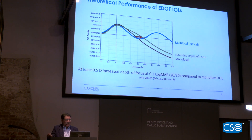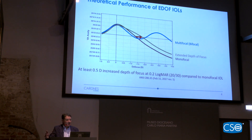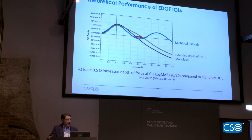This measure has allowed ANSI — the standard in the United States — to classify some lenses, because they are able to give a certain amount of extension of depth of focus compared to a monofocal IOL. So even from that regulatory perspective, focus curves can be very useful.